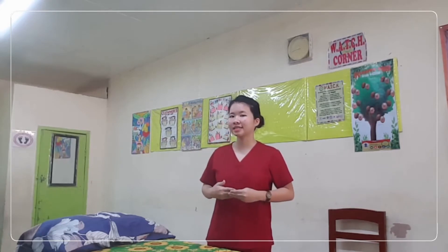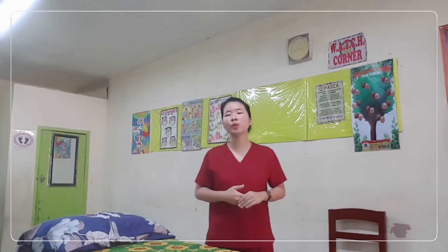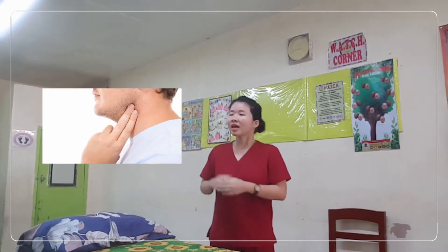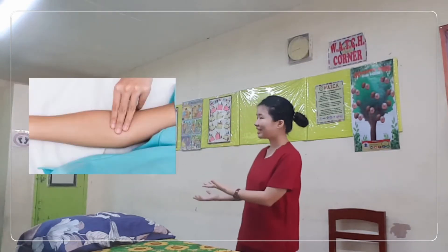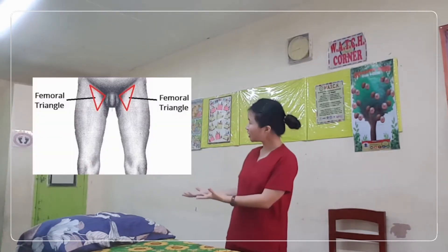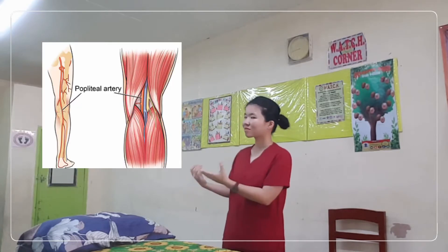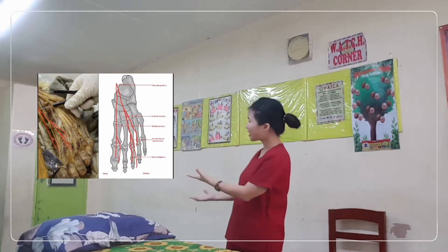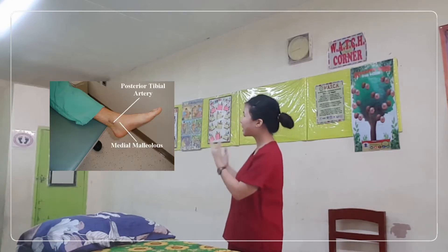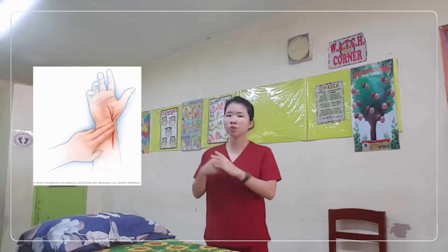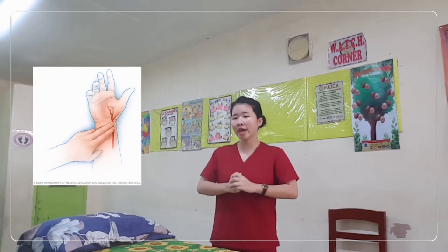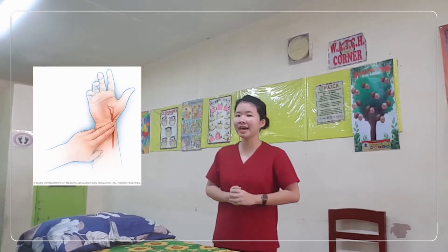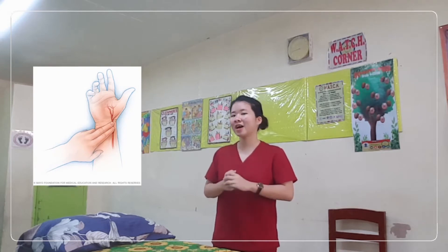There are nine different sites where we can feel the pulses. The first one would be on temporal, carotid, apical, brachial, femoral, popliteal, dorsalis pedis, and posterior tibial. And the last one would be radial, which we will perform today since it is the most common site where we can find pulses.